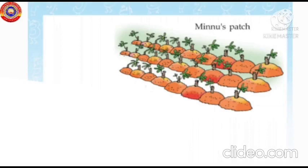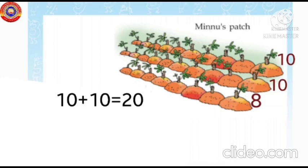Minnu's patch. Look here children. Minnu planted tapioca in three rows. How many plants in the first row? Yes, 10. In the second row, 10. Children, how many plants are there in the third row? Count and say. Yes, correct, 8. Total how many plants are there? Yes, two rows means 20, then last row 8. 20 plus 8 is equal to 28.